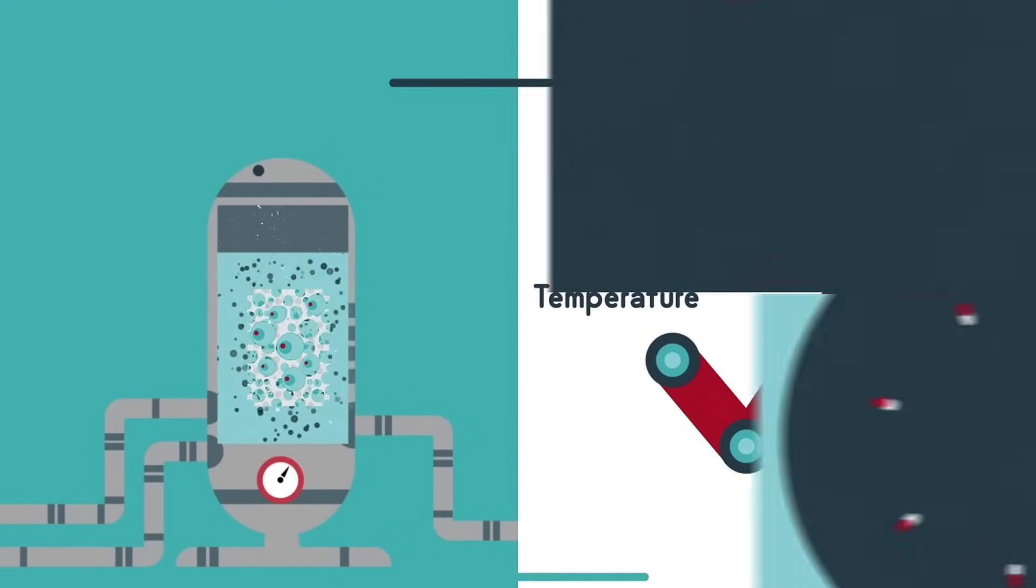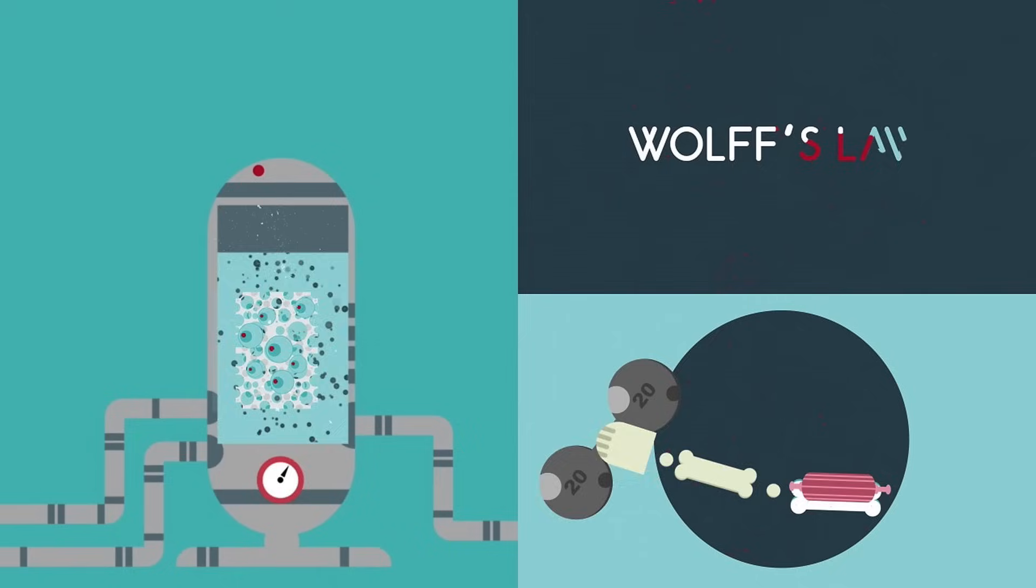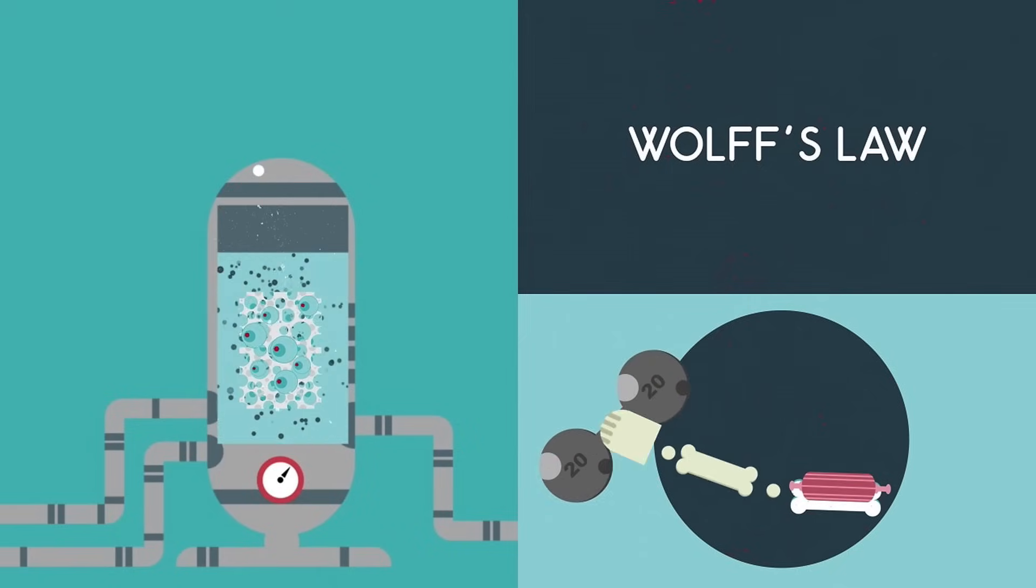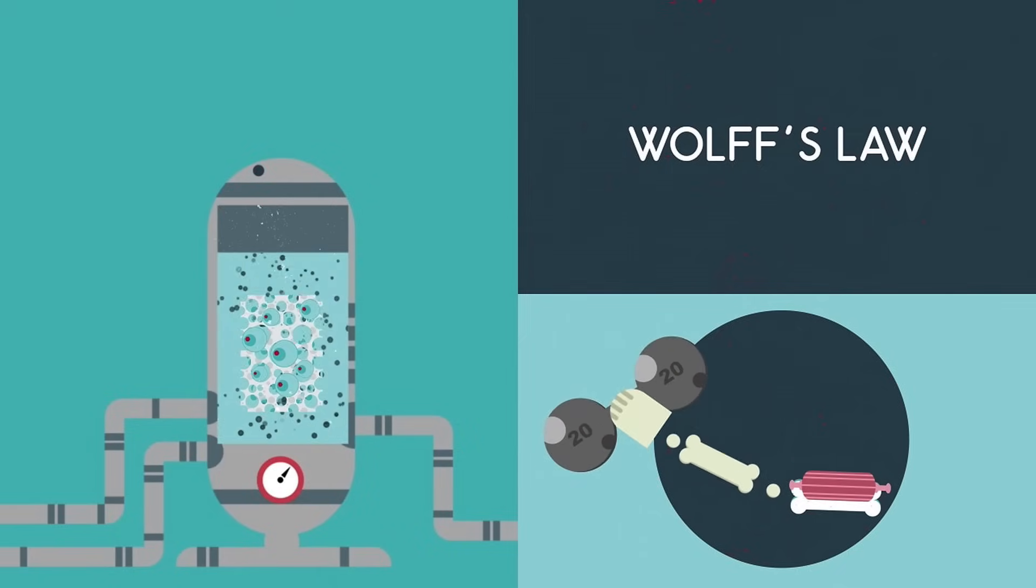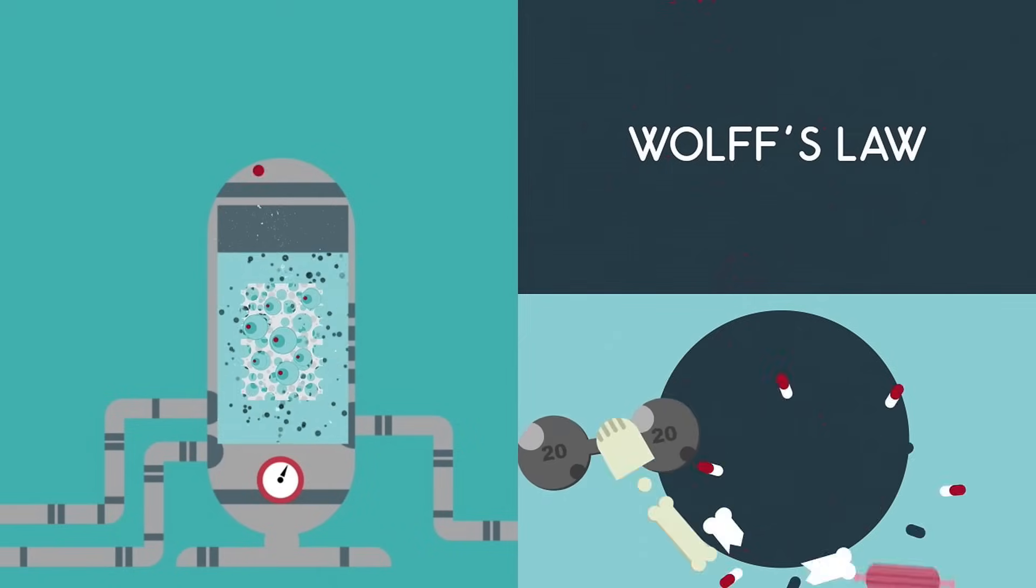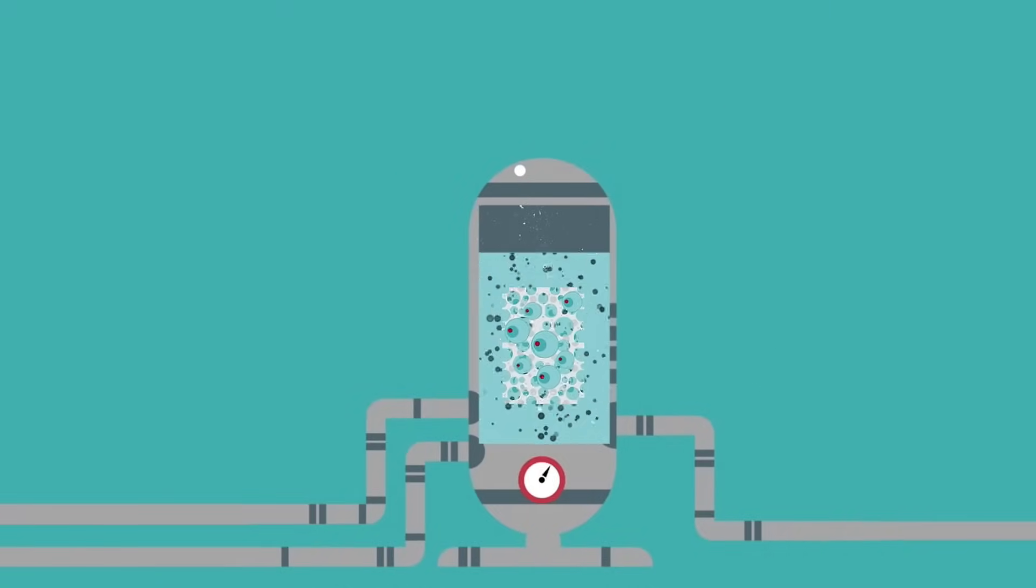But there's one thing missing. Remember Wolf's Law? An artificial bone needs to experience real stress, or else it will come out weak and brittle. So the bioreactor constantly pumps fluids around the bone, and the pressure tells the osteoblasts to add bone density.